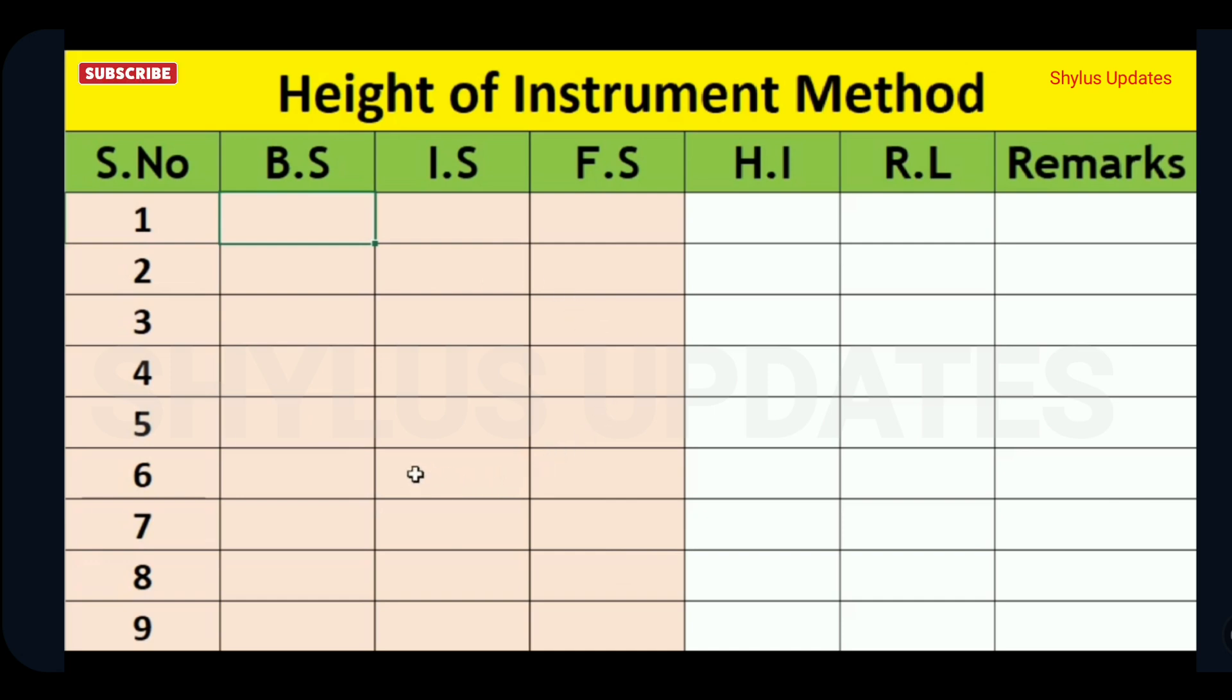I will explain clearly how to enter the readings into the table. The columns represent Back site BS, Intermediate site IS, Fore site FS, Height of instrument HI, Reduced level RL, and finally Remarks. Let's start entering readings in this table.